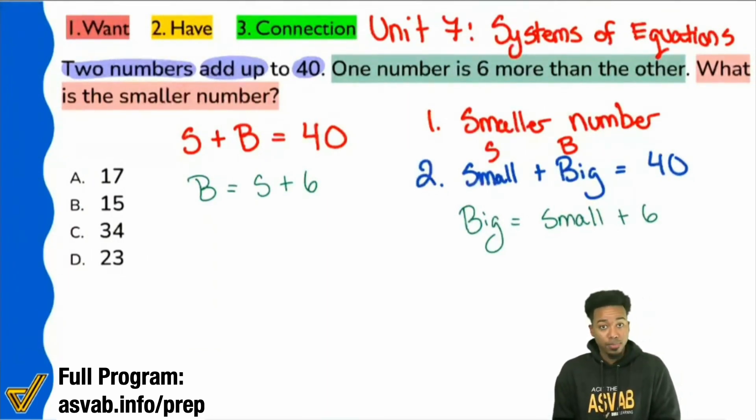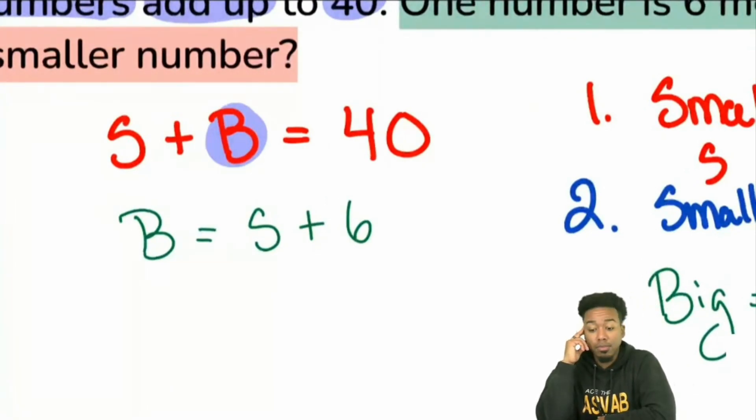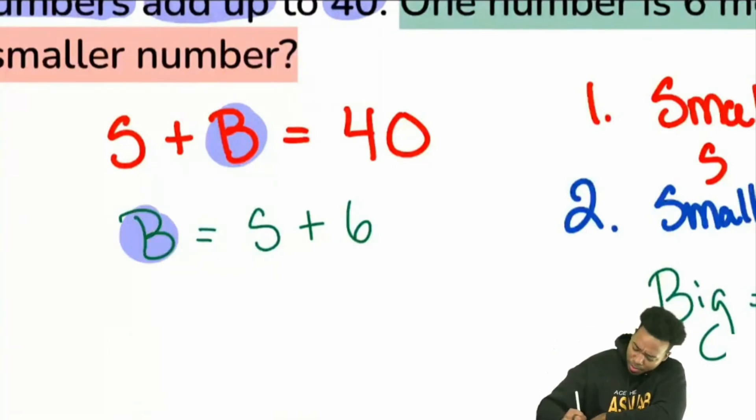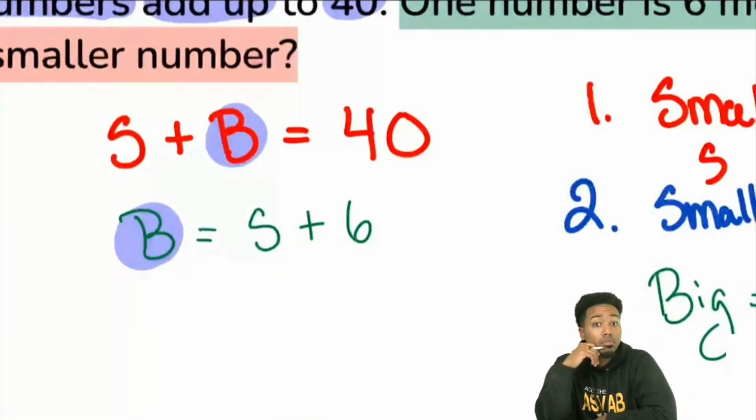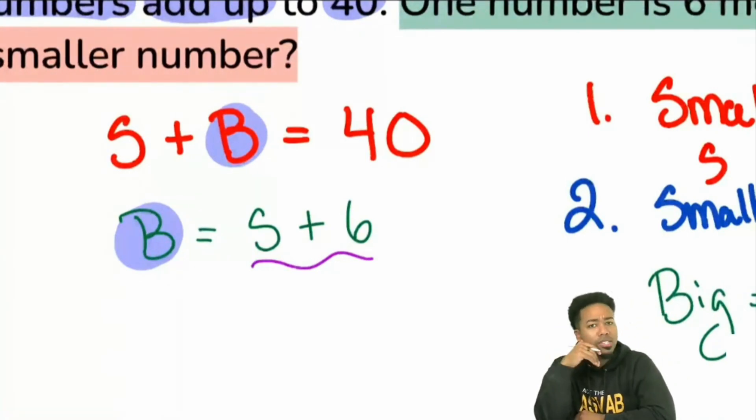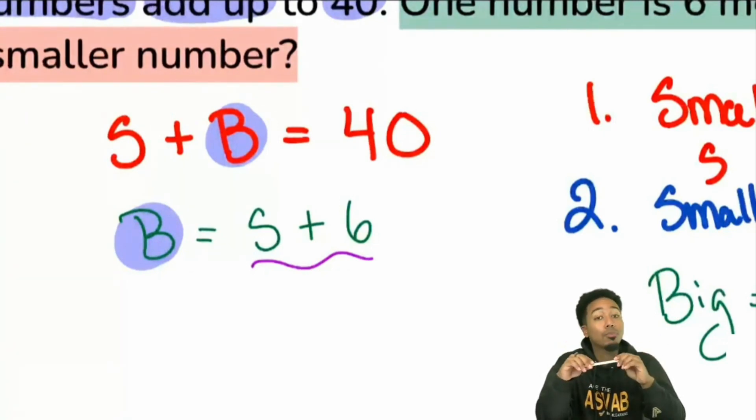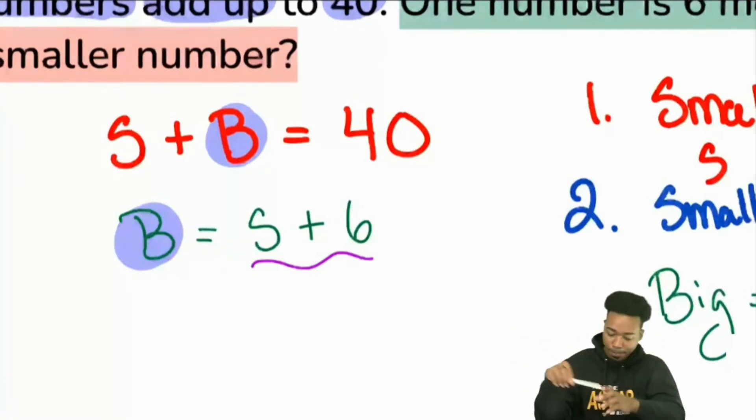So here's how substitution works. Here's how substitution works. Everybody, does this B here represent the big number? Okay. Yeah. Simple question. But I'm glad you answered. Yeah. That B represents the big number. Is it also true that this B right there represents the big number? Okay. So if I'm saying that small plus big equals 40, but I also know that the big number is the same thing as saying S plus six, small plus six. Is it true that I could replace the big number with the small number plus six? Is that true? It absolutely is. It absolutely is. This is the second way of doing it. This is the more traditional way that will help you solve problems more complicated than this without breaking a sweat.